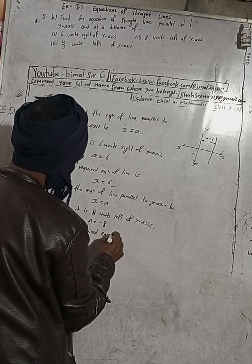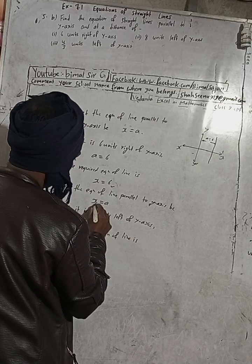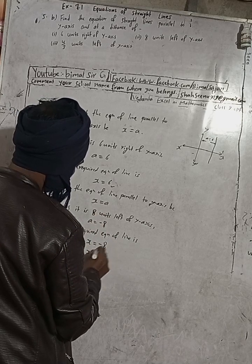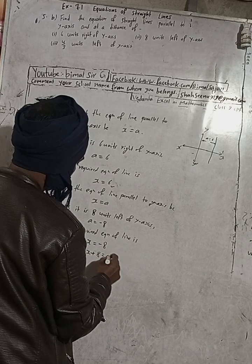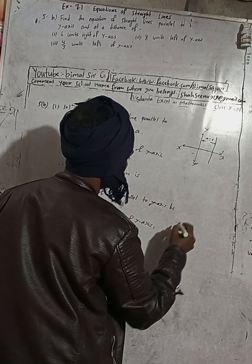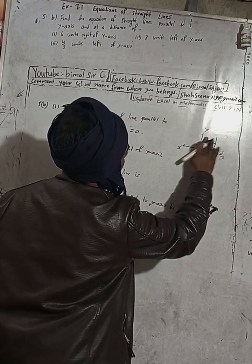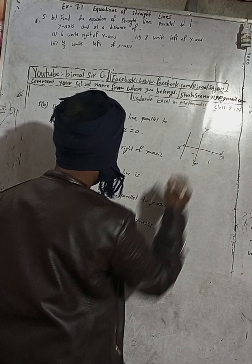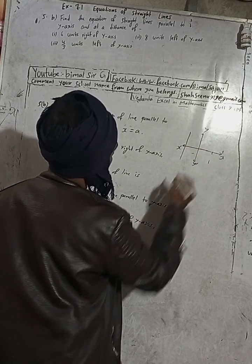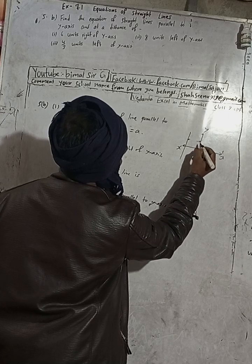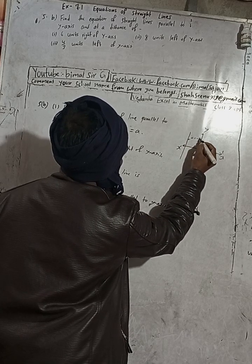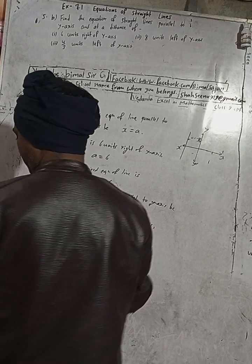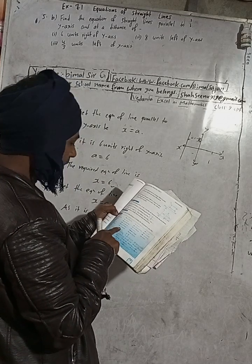Therefore the required equation of the line is x = a, but a = -8, so x = -8. When rearranged, this gives x + 8 = 0. In the figure, the line is 8 units to the left of the y-axis. The distance is a = -8 because it is on the left side. The required equation in the book is x + 8 = 0.